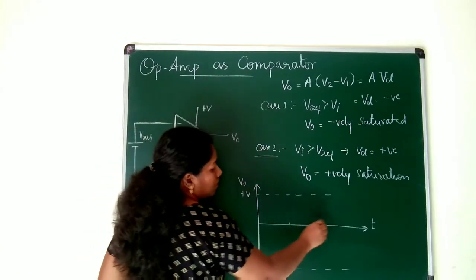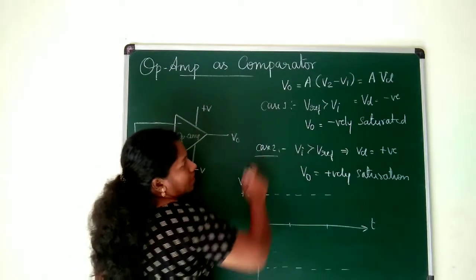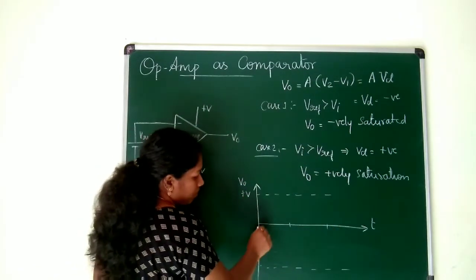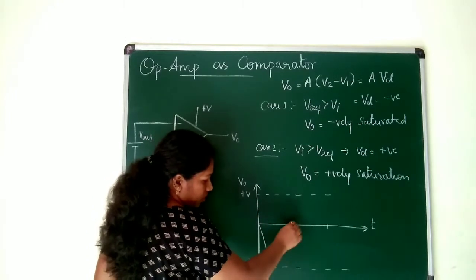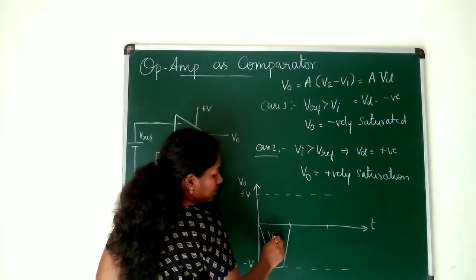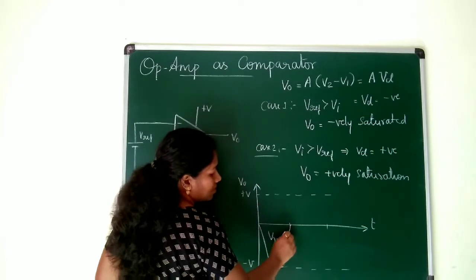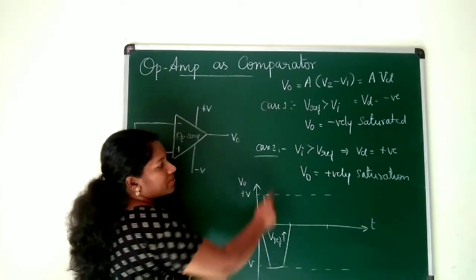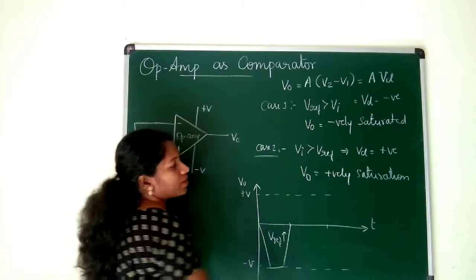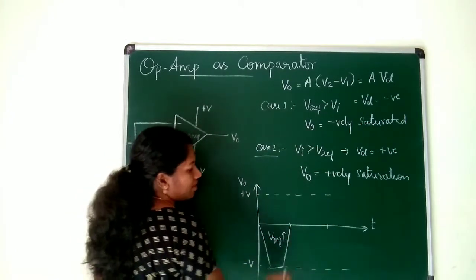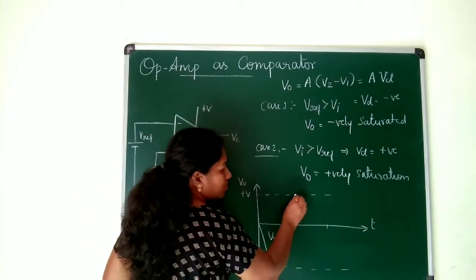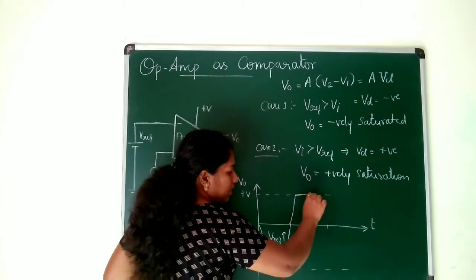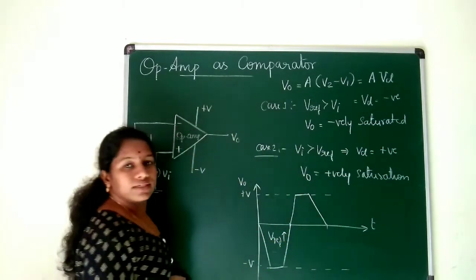So now what happens? During first case, first case what happens? You will be getting negative saturation like this. This is when V reference is greater. In the second case VI is greater so that you will be getting positively saturated value. So it goes to positive cycle and it gets saturated because of high gain and then it comes down to zero like this.